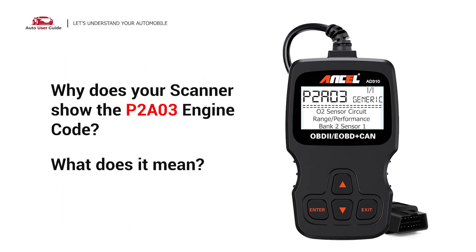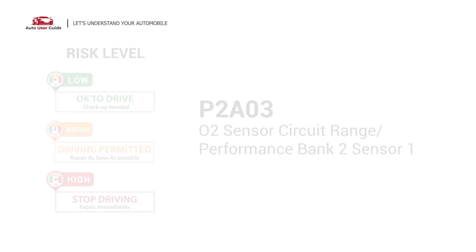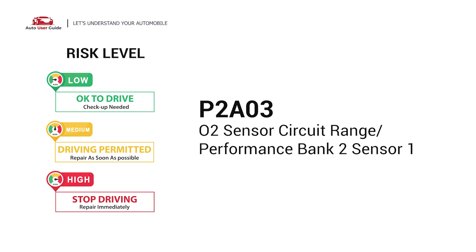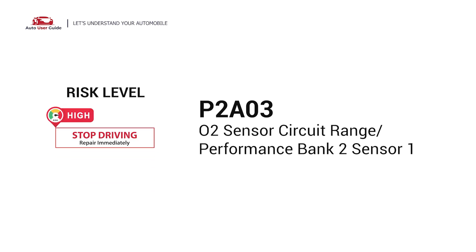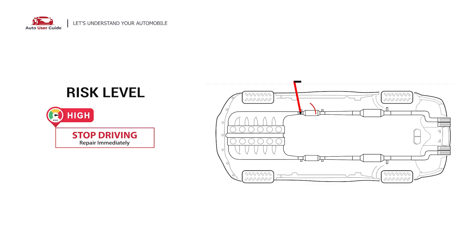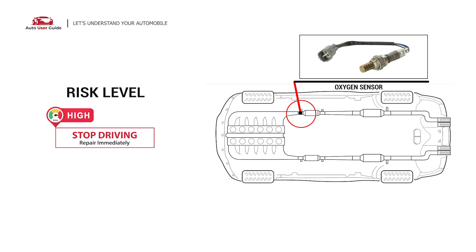Why does your scanner show the P2A03 engine code? What does it mean? P2A03 is a diagnostic trouble code for O2 Sensor Circuit Range Performance Bank 2 Sensor 1. This engine code indicates the PCM has detected a voltage reading from the oxygen sensor for engine bank 2 that is outside of normal parameters.